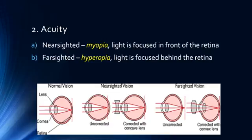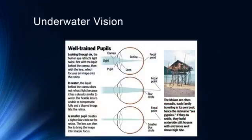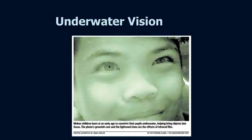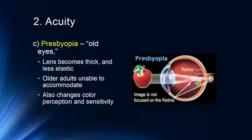Pupil size is related to accommodation. There's a tribe called the Moken who have trained themselves to change their pupil size to see underwater — they constrict their pupils to see more easily. The take-home message is that you should always read in bright light. The further open your pupils are, the harder it is for your eyes to focus on the retina. A smaller pupil actually helps you see more easily, so always use bright light.